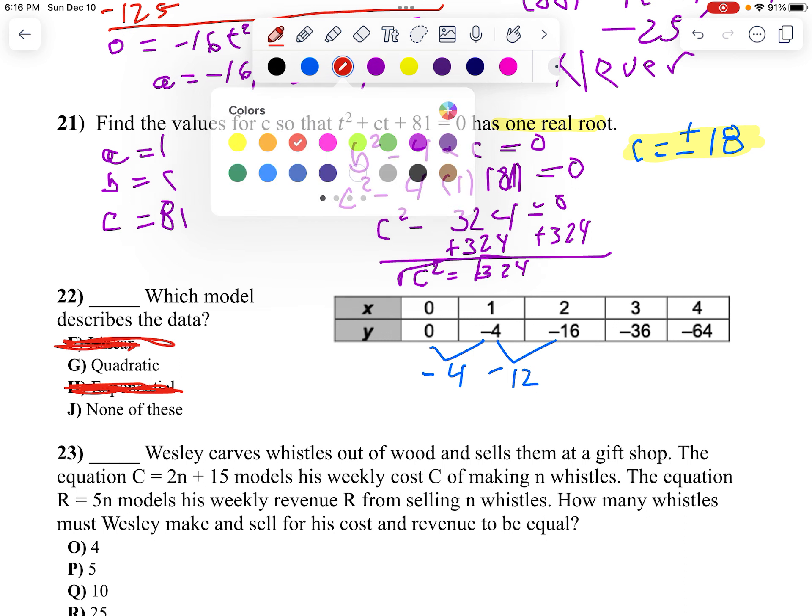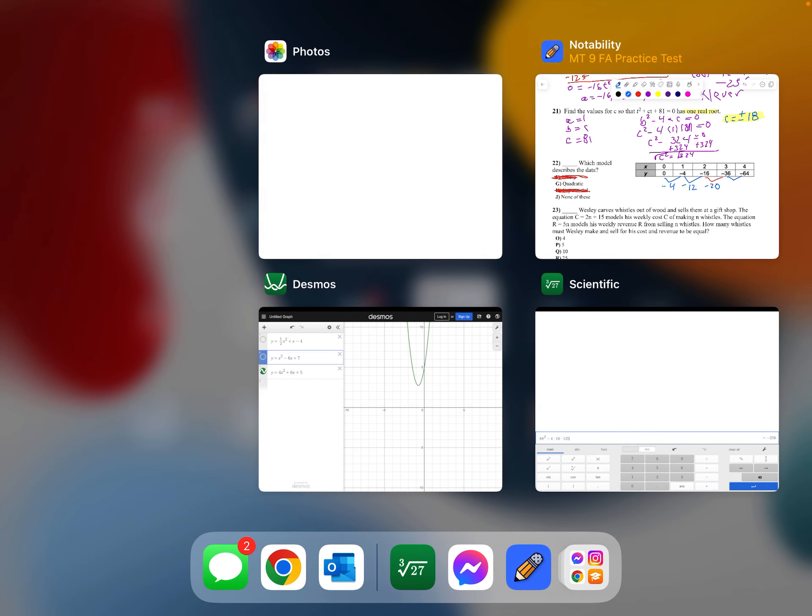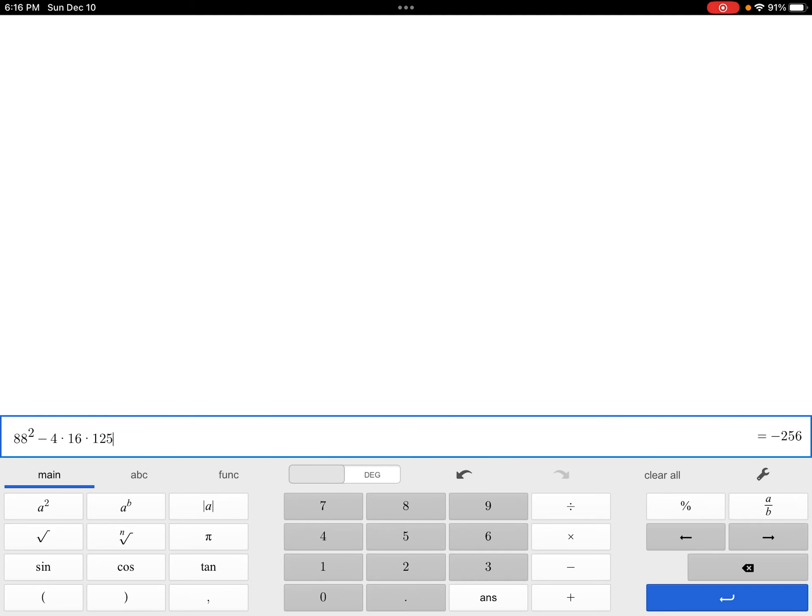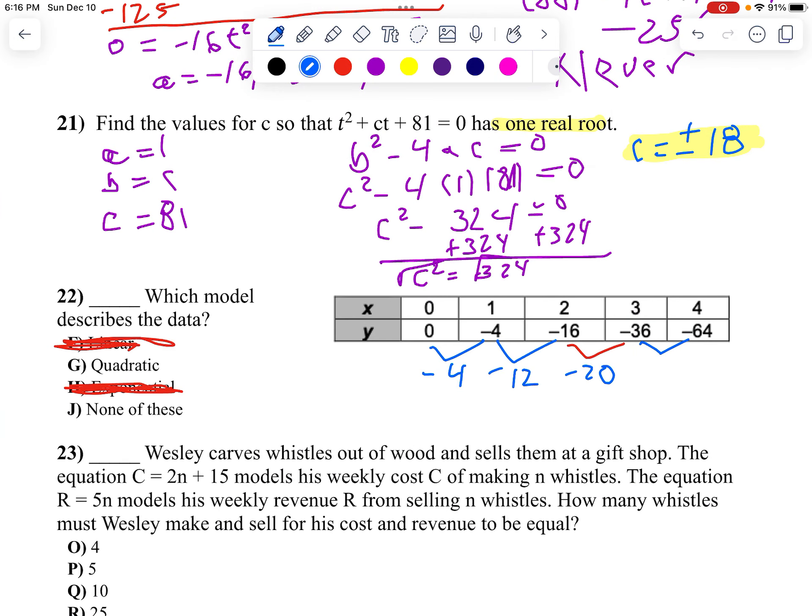So it's either quadratic or none of these. And then let's go negative 16 to negative 36. It's negative 20. And negative 36 to negative 64. I'll go 64 minus 36, which is negative 28. Now let's look at our second differences. From negative 4 to negative 12, it goes down 8. Oh, look at that. Down 8, down 8. So this is quadratic.